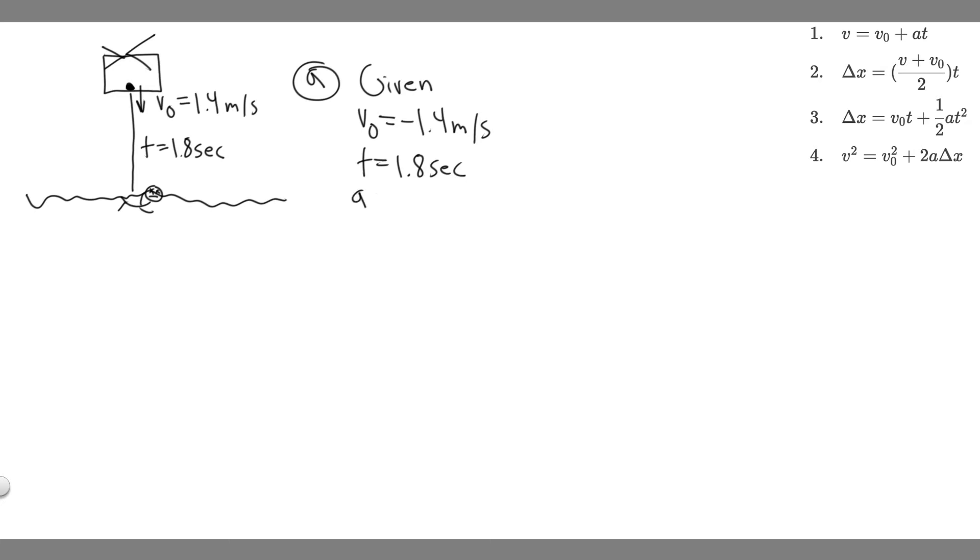We're also not given, but it's assumed that this is on Earth, which means there's an acceleration of minus 9.8 meters per second squared. That's the acceleration due to gravity, and it's negative because the acceleration is pulling it down. So that's all the knowns.